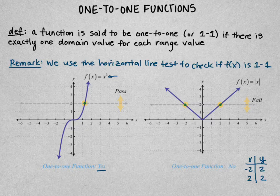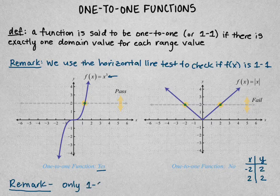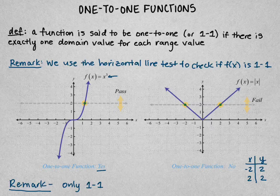The reason this is important — why we care about one-to-one functions — is because only one-to-one functions have inverses. So when we want to talk about the inverse of these trig functions, we need to make sure first that they are one-to-one.